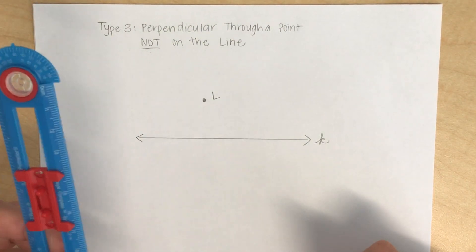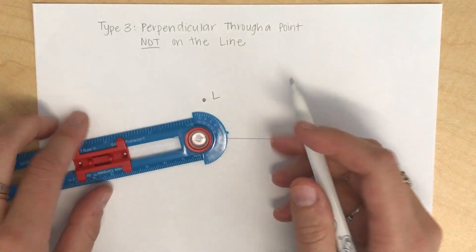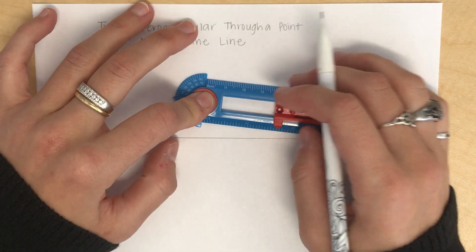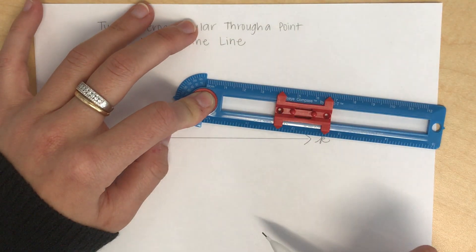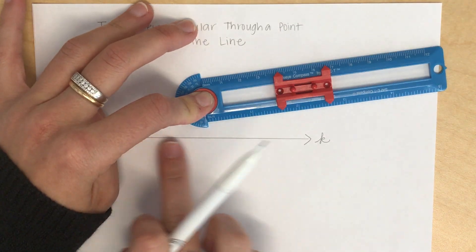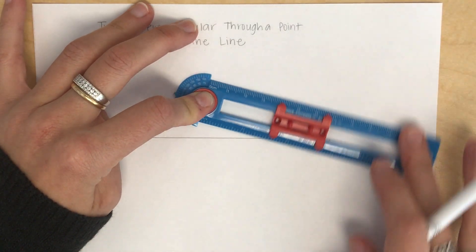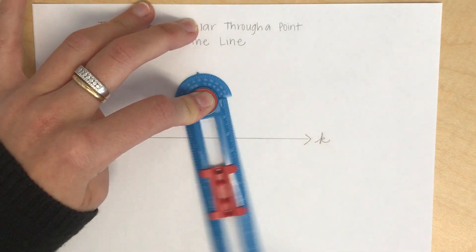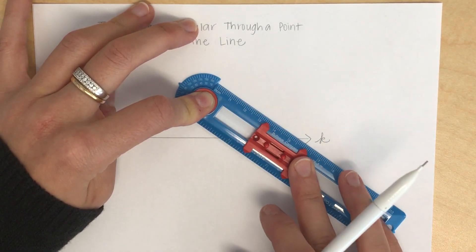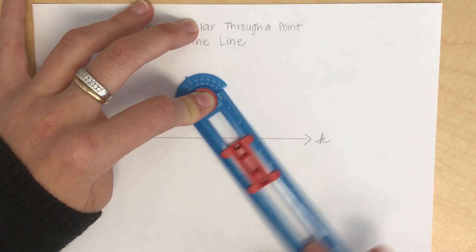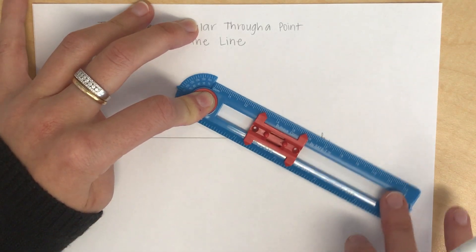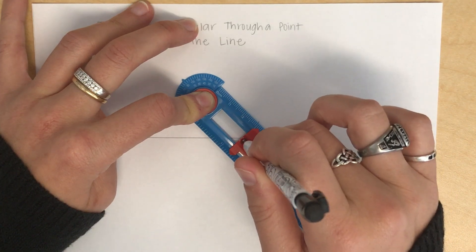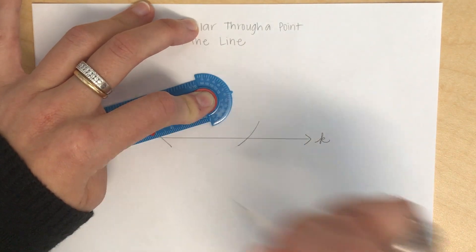My first step is I'm going to place my compass on point L, the center on point L. I'm then using any radius, I'm going to draw arcs that intersect this line K at two points. So it doesn't matter which radius I choose as long as I know that when I go to the left and to the right, it will intersect. So I have to make mine just a little smaller here so that it will intersect both sides of my line. So I'm going to make my first intersection arc and then keeping that radius, a second intersection arc.